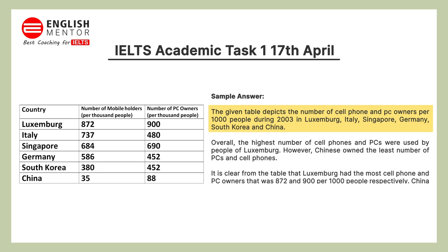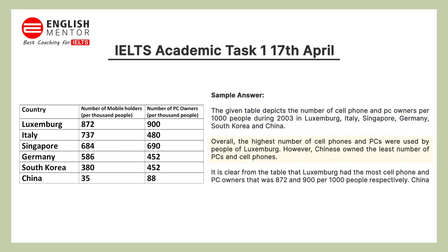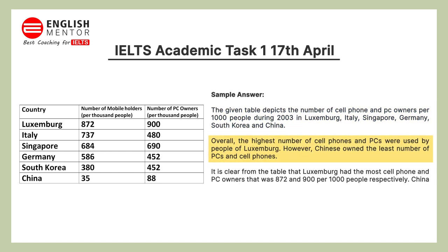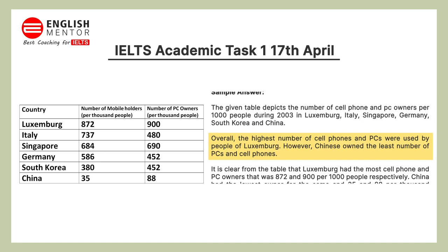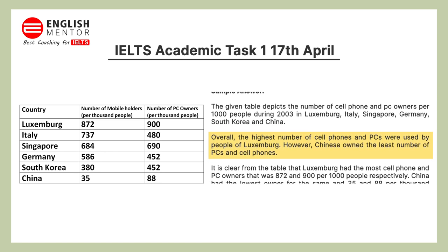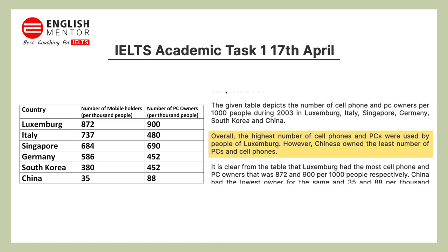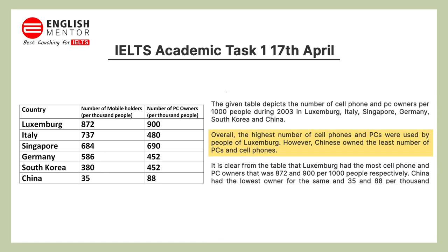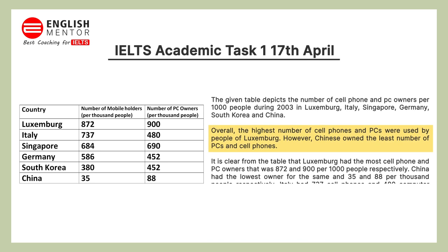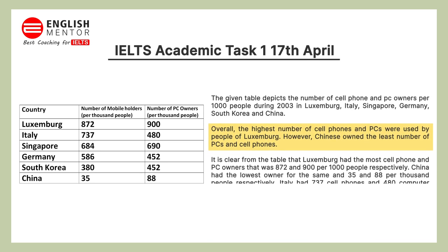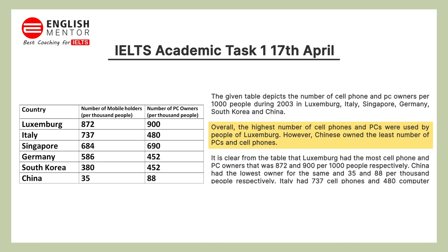The conclusion you can write in the second paragraph as well as at the end, like this: Overall, the highest number of cell phones and PCs were used by people of Luxembourg. However, Chinese owned the least number of PCs and cell phones.